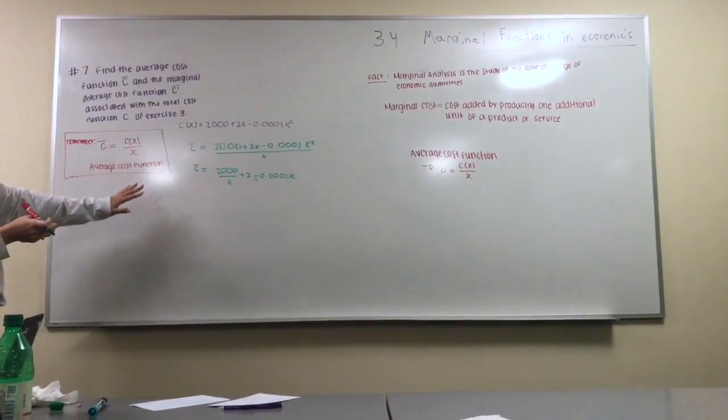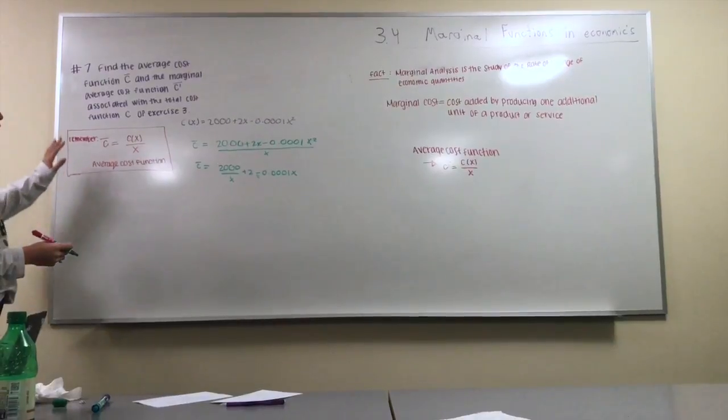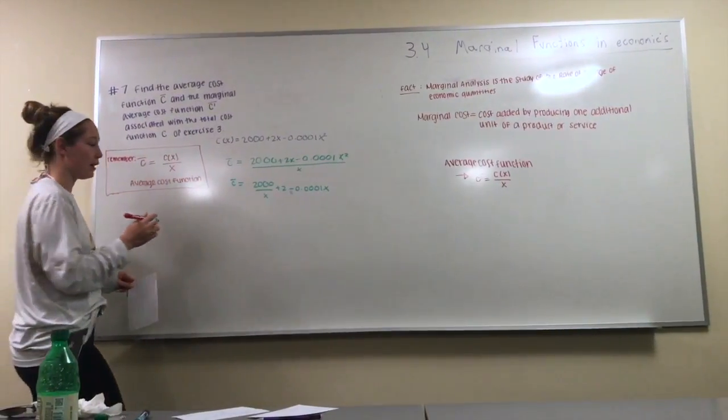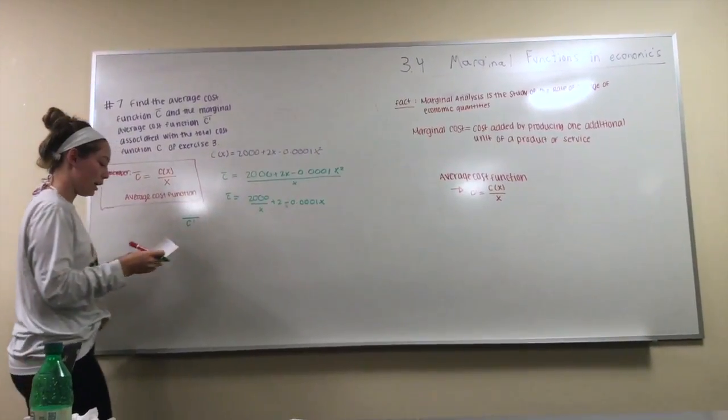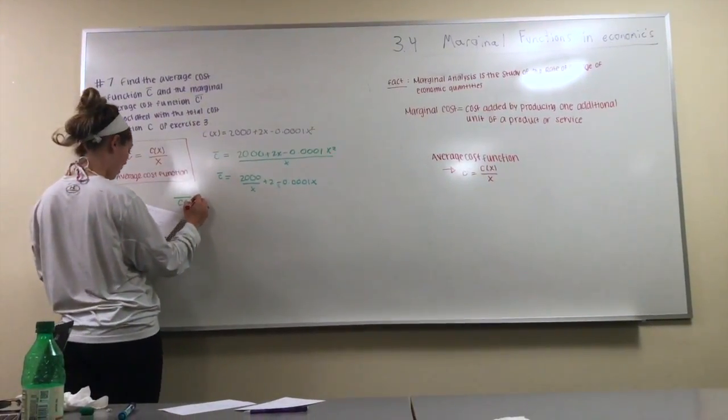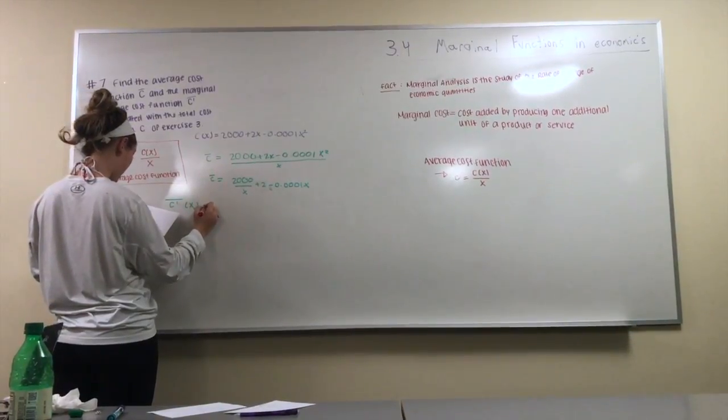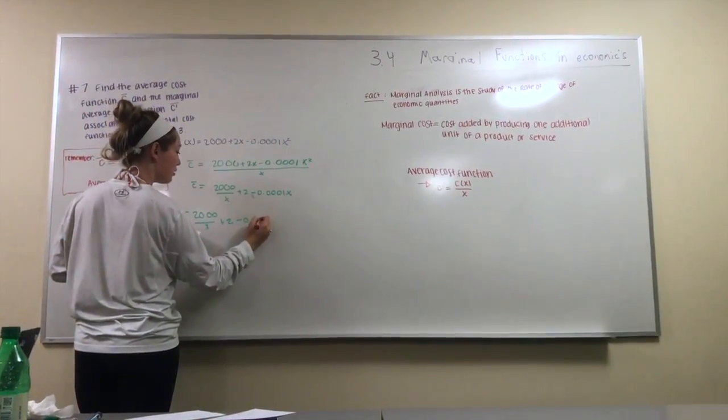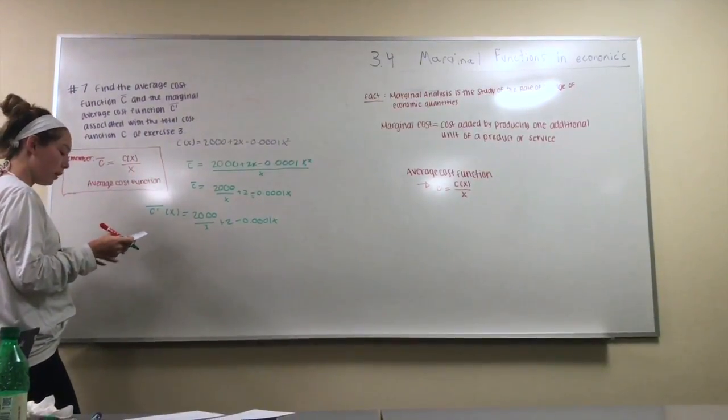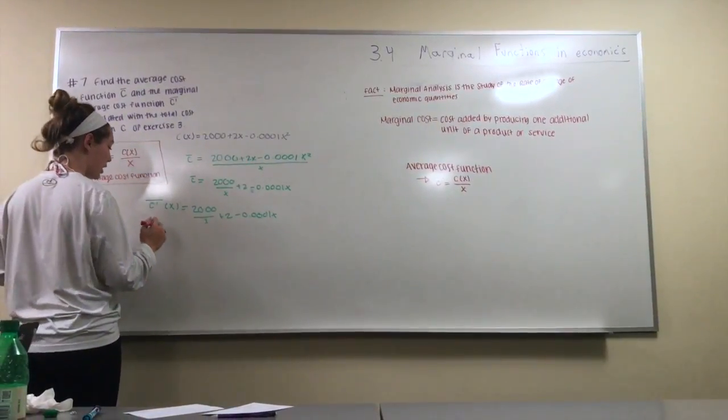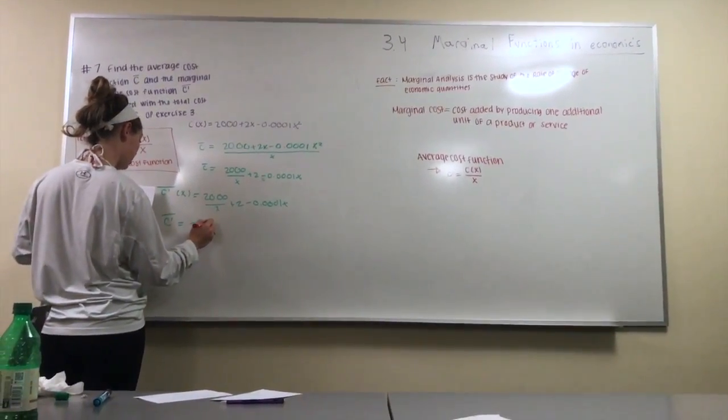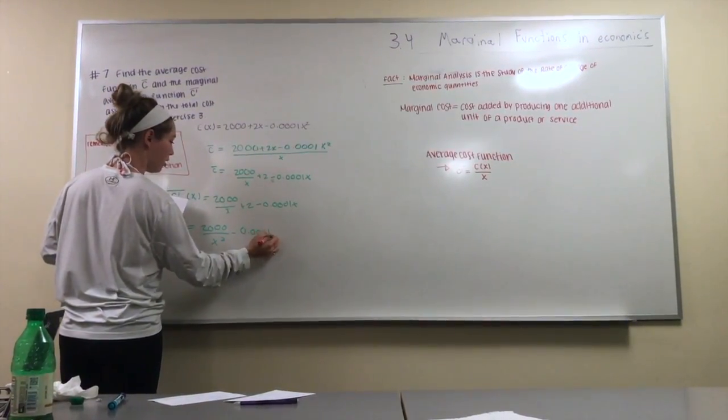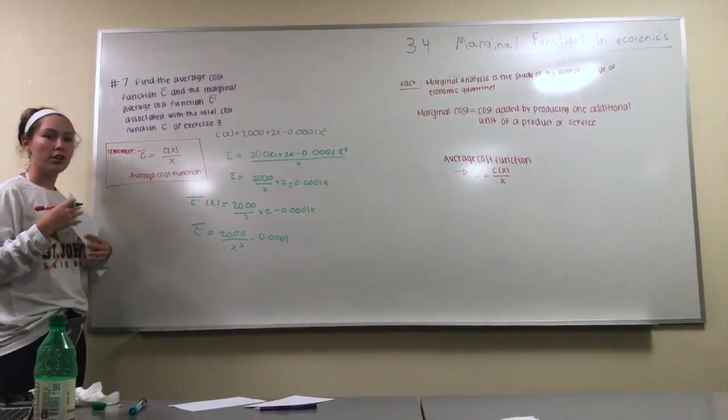Okay, so now once you've gotten that equation we can actually work on the marginal cost equation that it's asking for in the question. So when you're finding marginal cost, you need to remember that you are now trying to find the derivative. So now you're trying to find C̄' and that is going to equal, so C̄'(x) equals -2,000/x² plus 2 minus 0.0001x. Now you're going to use the same process when you're finding a derivative of any other equation and then it's going to look like this. And that is your marginal cost equation.